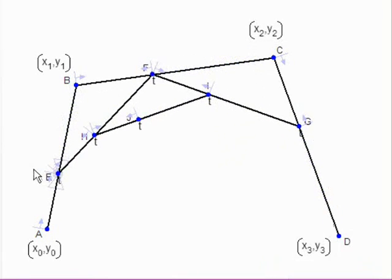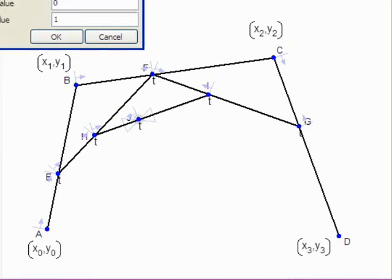Now, as I drag, I can see that the T moves. And if I create a locus, I want to create a locus of this point J.